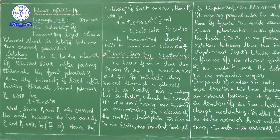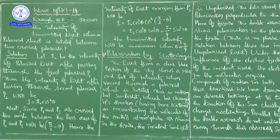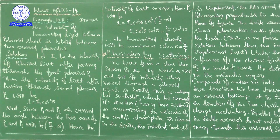Then the intensity of the light after passing through the second polarizer P2 will be I equals I₀ cos squared theta, which is Malus's Law formula. Here theta is the angle between the pass axis of P1 and P2.